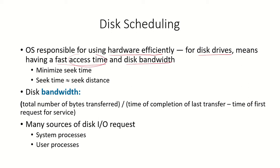When we talk about access time, accessing a particular block on the disk involves two things: seek time and rotational latency, both discussed in a previous video on hard disk. To achieve fast access time we need to minimize seek time. Seek time is the time taken by the read-write head to move over a particular cylinder or track, and minimizing seek time means minimizing seek distance.